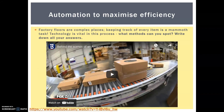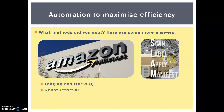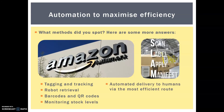Now we're going to talk further about automation and maximizing efficiency — manufacturers are trying to save money and make things faster. One of the best examples is Amazon, a multi-million dollar company. This video is absolutely fascinating — watch at least the first half and it'll give you a really good insight, particularly how the robots bring everything to the pickers. You'll be astounded. So you probably spotted some methods of efficiency: tagging and tracking, robot retrieval, barcodes and QR codes for the robots to follow and for pickers to scan, monitoring stock levels constantly, automated delivery via the most efficient route, moving down conveyor belts and scanning with hand terminals, boxing and transport — that slam they were talking about.